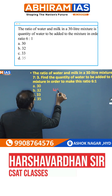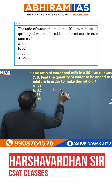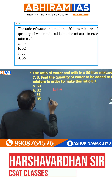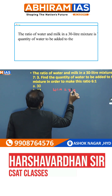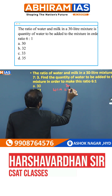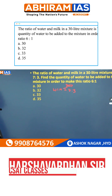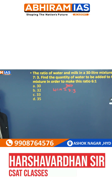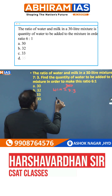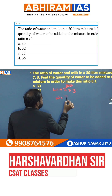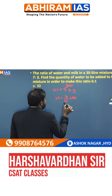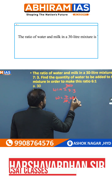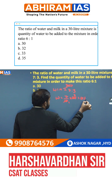The ratio of water and milk in 30 liters of mixture is 7 is to 3. First, we will see the standard procedure. What is the water quantity? 7 parts out of 10 parts into 30 liters — that will become 21 liters.